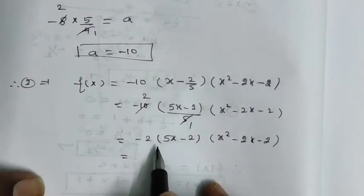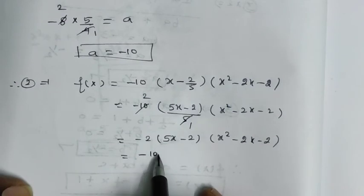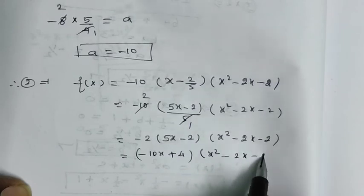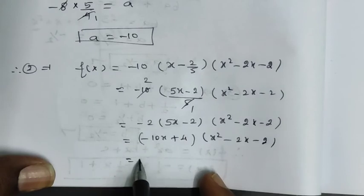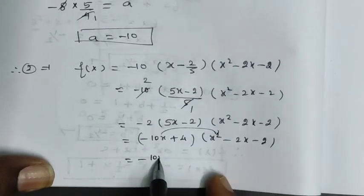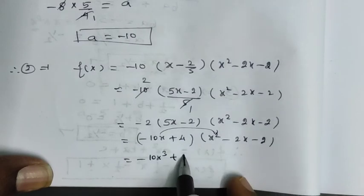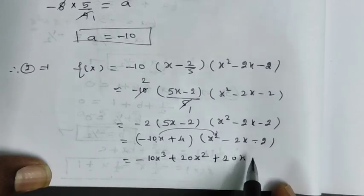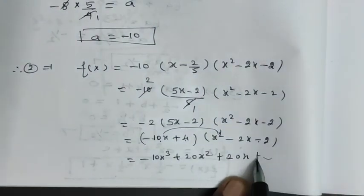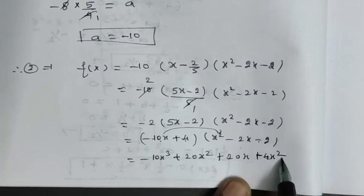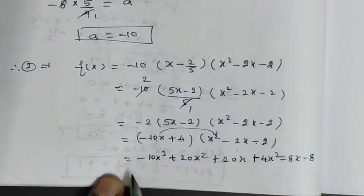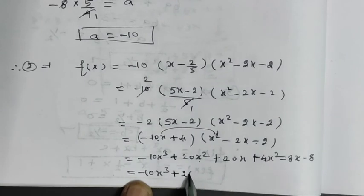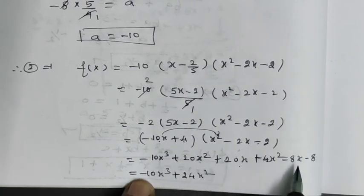Expanding minus 2 times (5x minus 2)(x squared minus 2x minus 2): first expanding gives minus 10x cubed plus 20x squared plus 4x squared, combined as 24x squared, plus 20x minus 20x terms, and the constant terms, yielding minus 10x cubed plus 24x squared minus 12x minus 8.